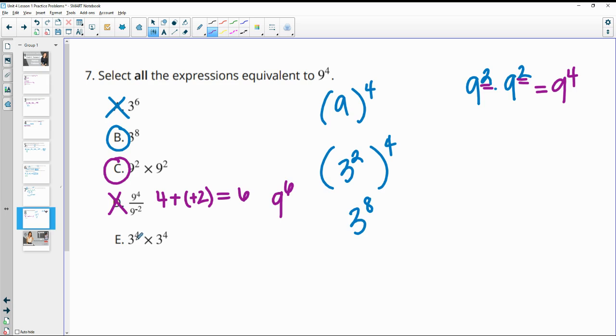3 to the fourth times 3 to the fourth. So we'd add these together. So we'd have 3 to the 4 plus 4, which is 3 to the eighth, which we've already discussed is equivalent to 9 to the fourth. So E is good.